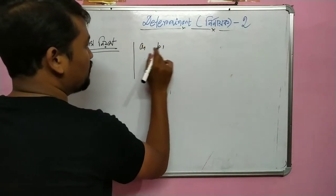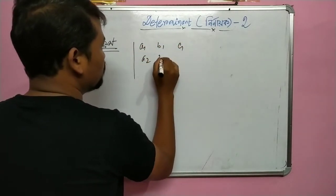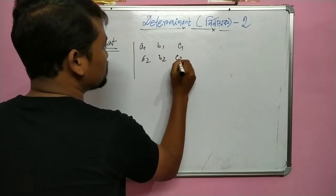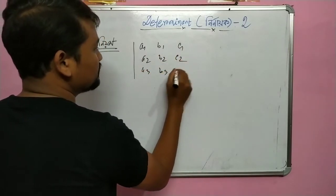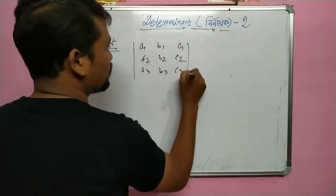The third-order determinant has elements: a1, b1, c1 in the first row; a2, b2, c2 in the second row; and a3, b3, c3 in the third row.